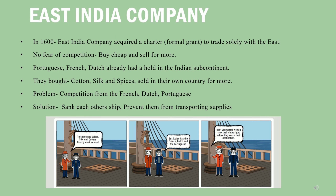In 1600 AD, the East India Company acquired a formal charter — like a grant from the Queen — which gave them the sole right to trade with the East. No other trading companies from England were allowed to trade with the East. This had a positive effect: there was no competition from other English trading companies.